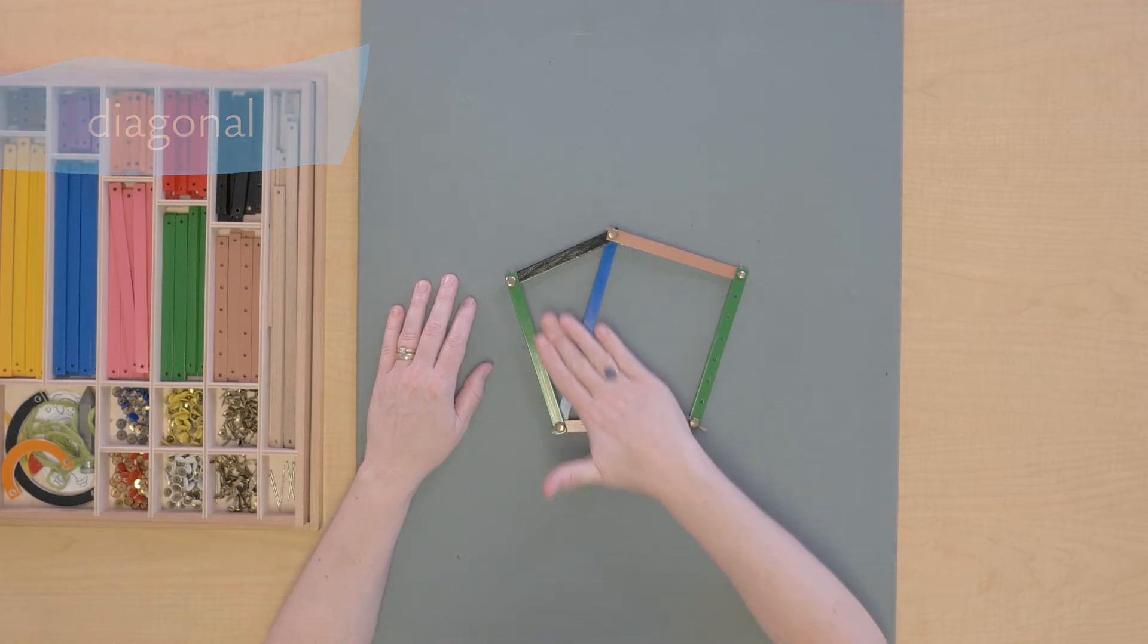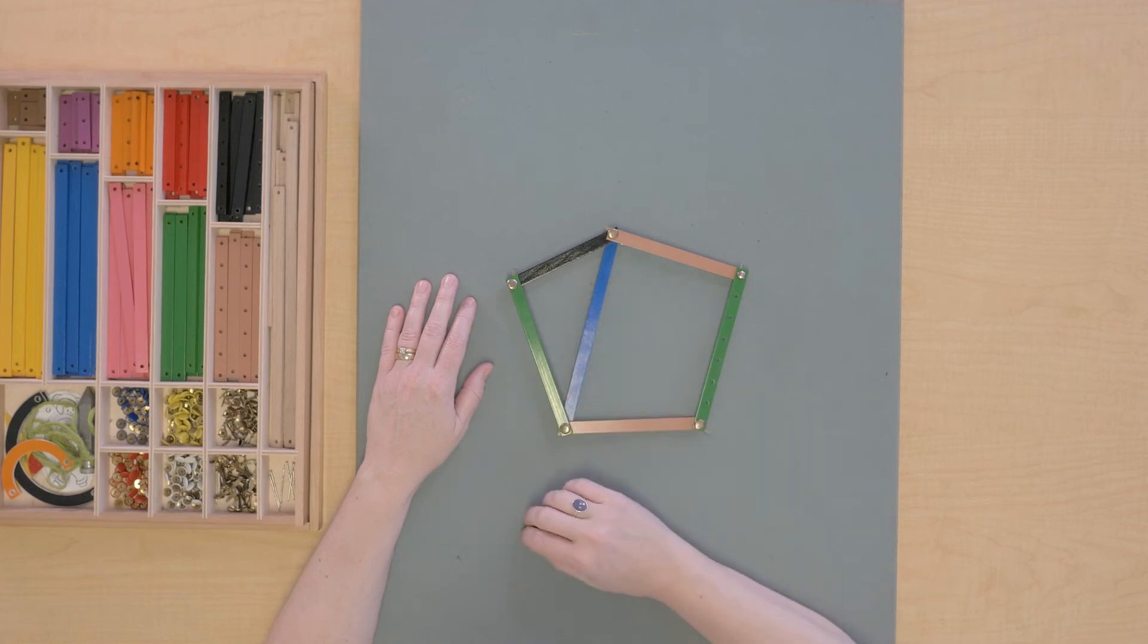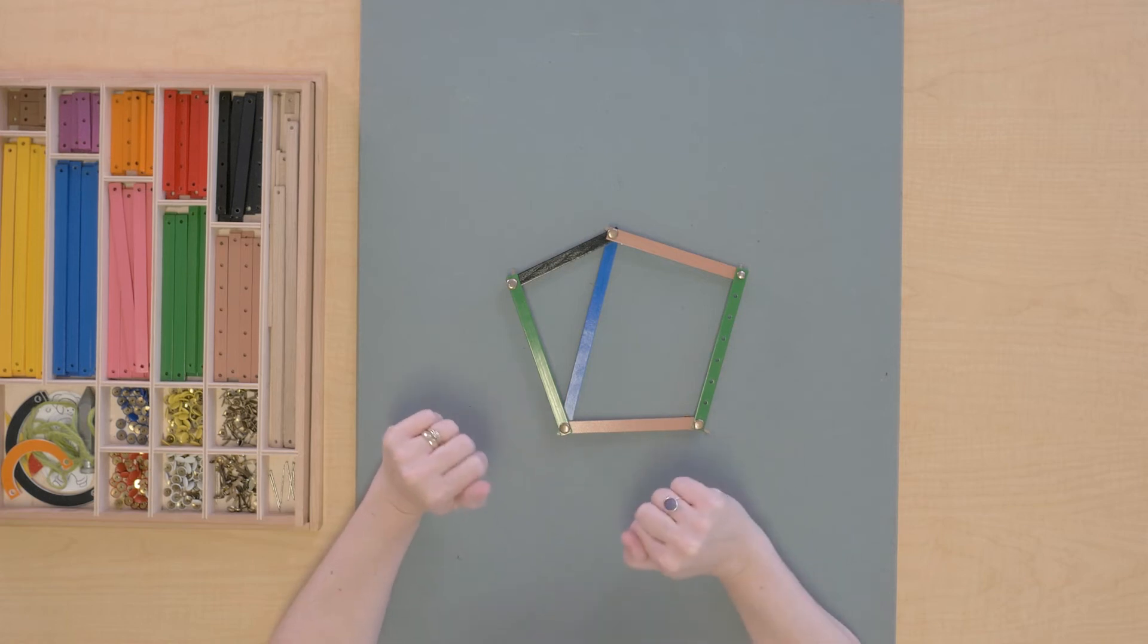So we have the surface, we have some angles, vertex, the perimeter, and the diagonal.